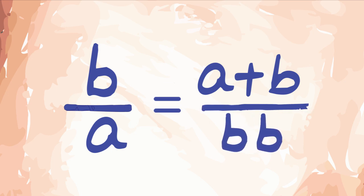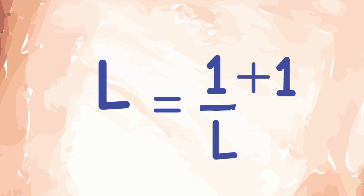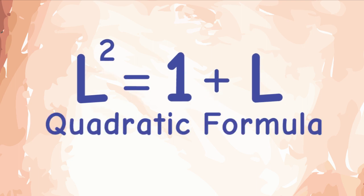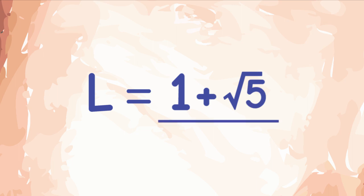Doing some minor algebraic manipulations and replacing B by A as L, L because it is a limiting value that the ratios are getting closer and closer to, we get a quadratic equation. Solving this equation using the quadratic formula, you get the value of L as 1 plus square root of 5 by 2.